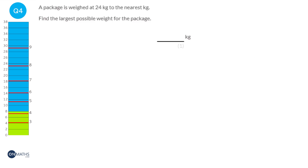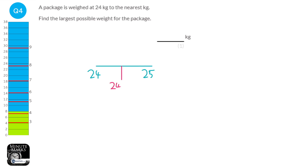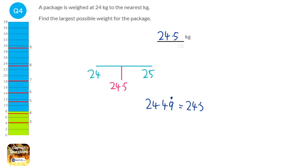To find the largest weight this package could have been before it is rounded, let's do a quick number line between 24 and what it would round to next. It's to the nearest kilogram, so the next value is 25. The cut-off point for rounding is halfway between 24 and 25, which is 24.5 — and that is our answer. Some might note the largest it can actually be is 24.49 recurring, which equals 24.5; in your exam you can write either and get full marks, but for brevity write 24.5.